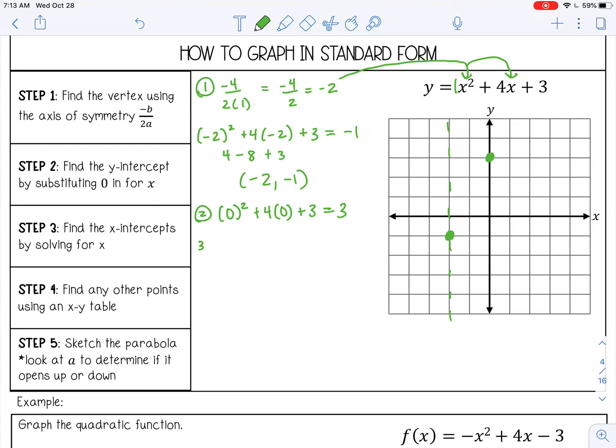Let's find our zeros next, our x-intercepts. So let's see if this will factor. So 3 and 1, and that does give me 4. 3 times 1 is 3. 3 plus 1 is 4. So setting those both equal to 0. So x equals negative 3 and x equals negative 1. So go ahead and plot those. Negative 3 and negative 1.